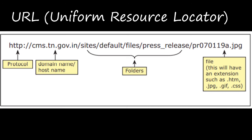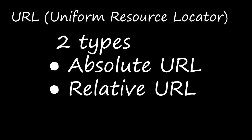The four parts of a URL are: first the protocol, then the domain name or host name, then the folders, and finally the file, which may have an extension like .jpeg, .gif, .css, or .htm. For example, in the URL http://tncms.tn.gov.in/sites/default/files/press_release..., 'http' is the protocol, 'tncms.tn.gov.in' is the domain name, and the rest are folders and file names.